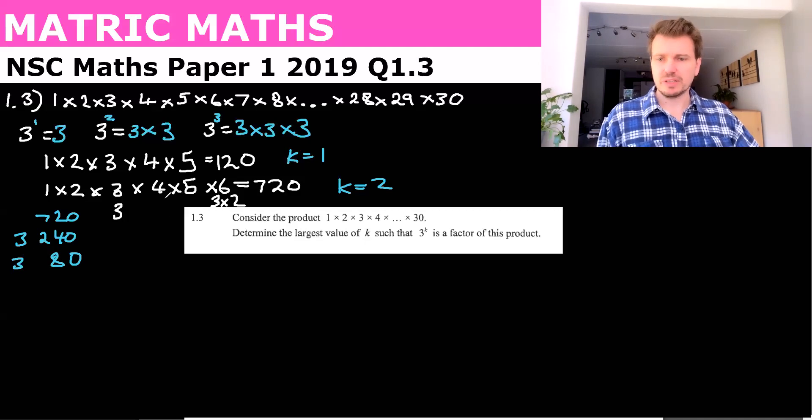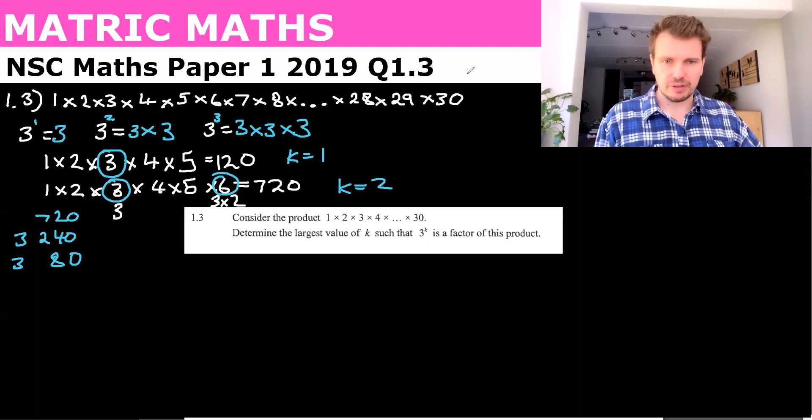So what we're doing is we're basically looking for all the numbers that contain a 3 as a factor. In the first one was just 3, and this one, it was just 3 and 6. So now let's take it all the way up to 30.